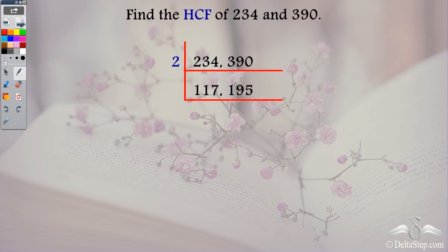Next I check for 3. So if you check using the divisibility rule of 3 you will see that both the numbers are divisible by 3. So I divide by 3. 117 divided by 3 gives me 39 and 195 divided by 3 gives me 65. So you need to actually divide and check.